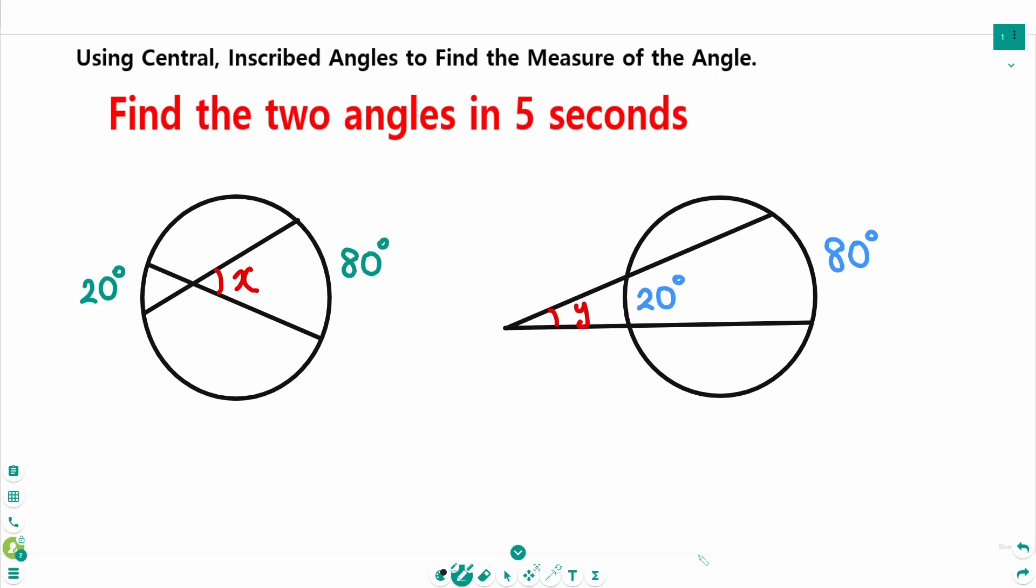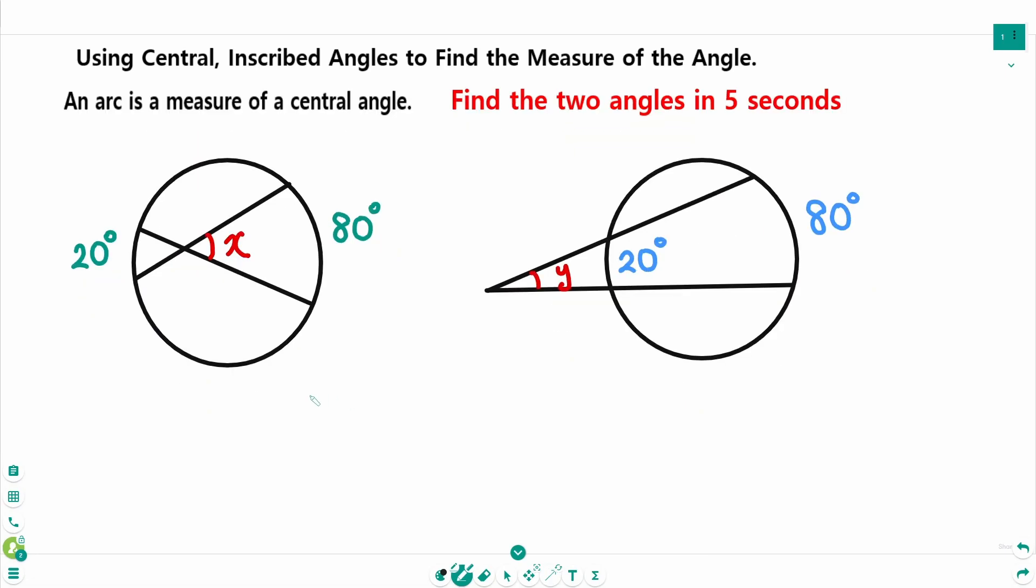This video will cover how to find the measure of angles using central inscribed angles. Angle x is 80 plus 20 over 2, and 100 over 2 is 50 degrees.